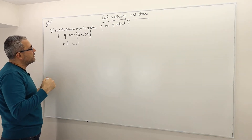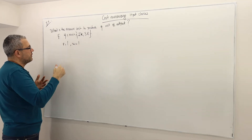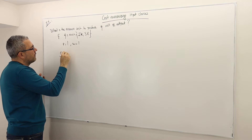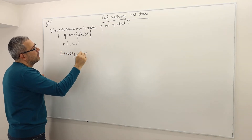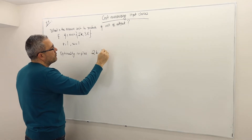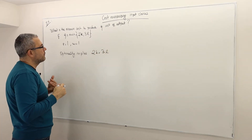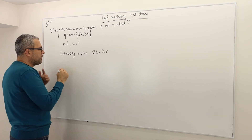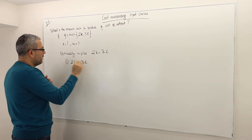If you remember our earlier discussion, because this is a Leontief production function, optimality always implies I need to choose 2k equals 3l as my input combination. So that's going to be equation 1: 2k equals 3l.